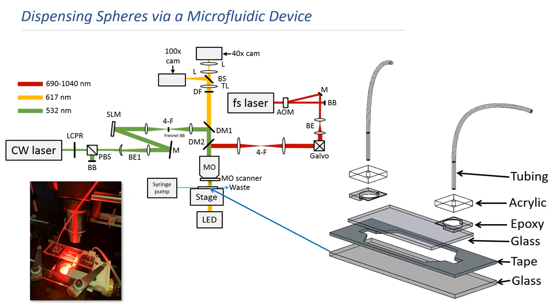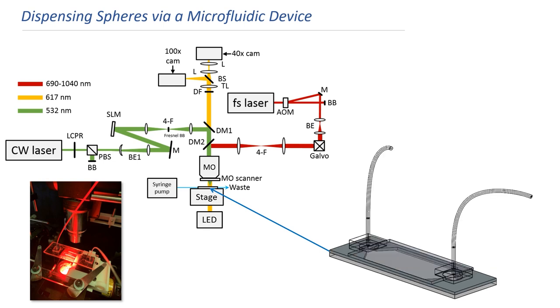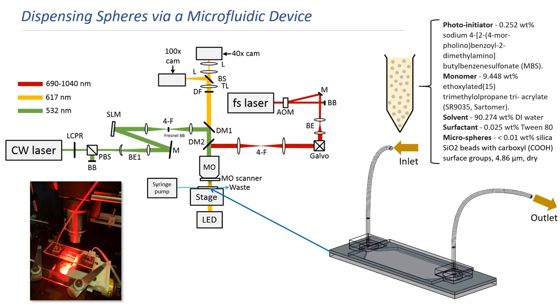A detailed view of the system's microchannel is provided on the right as shown here. It consists of tubing, acrylic, epoxy, tape, and two glass coverslips assembled like this. The chemical composition of the photocurable medium in which the microspheres are suspended is shown here. The solution is driven through the inlet by an automated syringe pump until the suspended microspheres reach the build site.